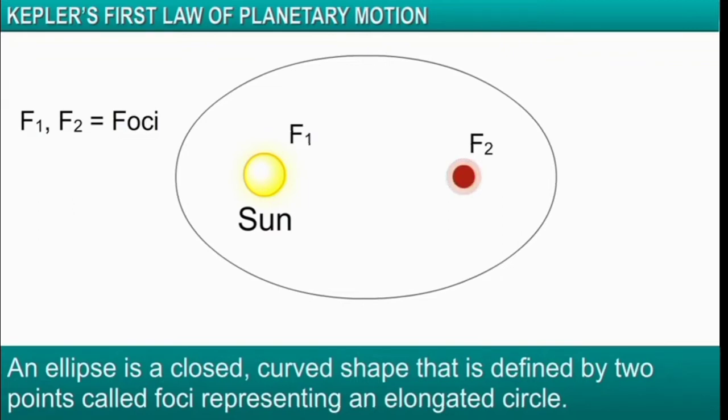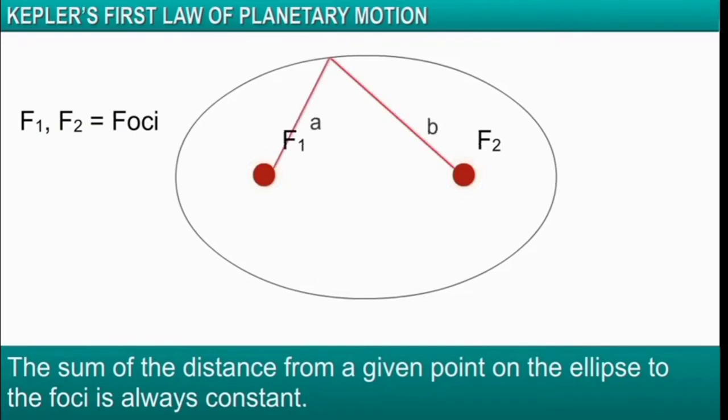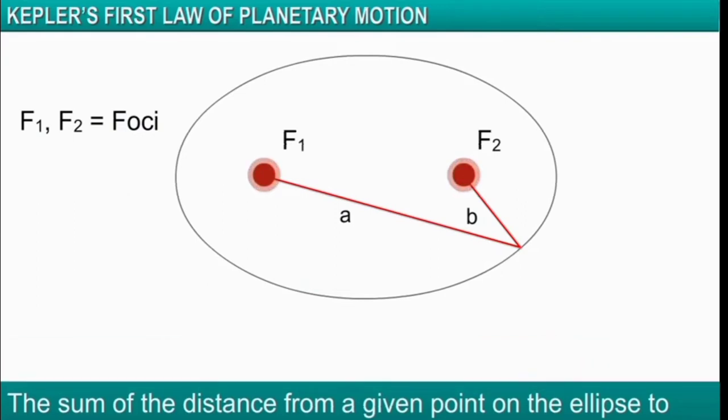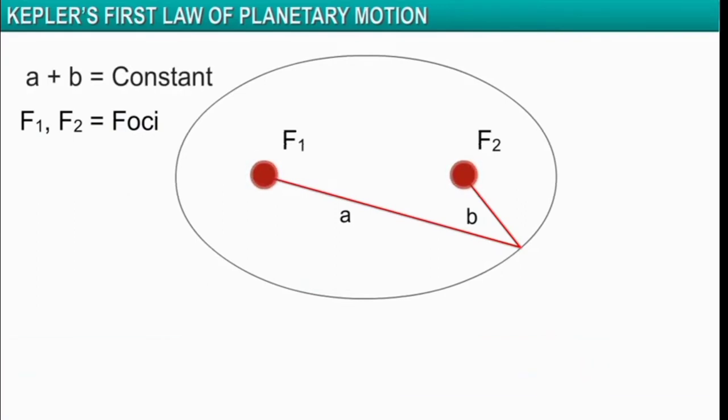An ellipse is a closed curved shape defined by two points called foci, representing an elongated circle. The sum of the distance from a given point on the ellipse to the foci is always constant. In the given figure, a plus b is always constant.